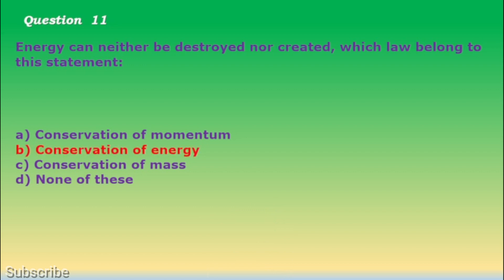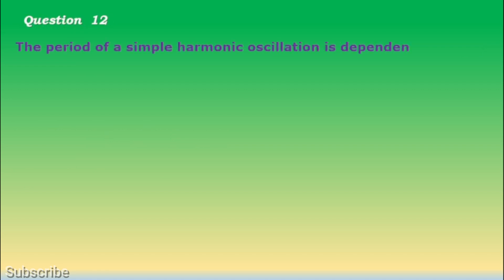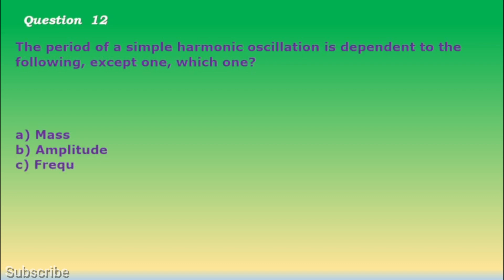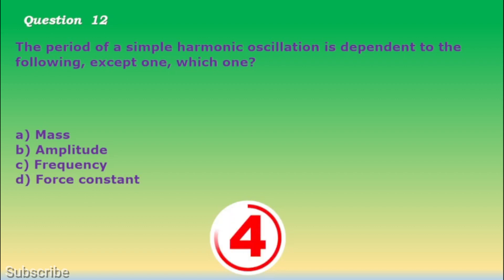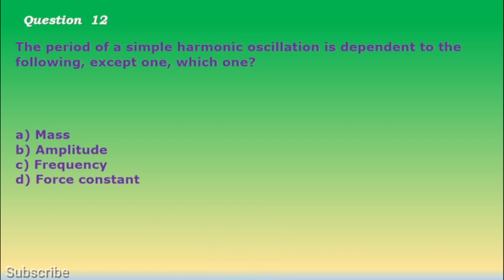Question number 12. The period of a simple harmonic oscillation is dependent on the following, except one. Which one? a. Mass, b. Amplitude, c. Frequency, d. Force constant. The correct answer is letter b. Amplitude.